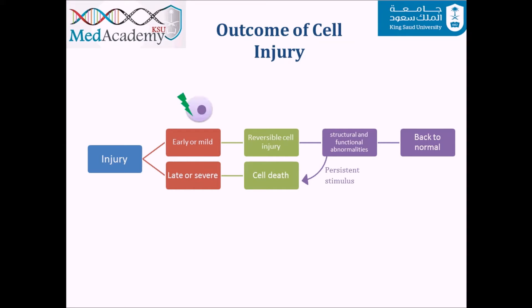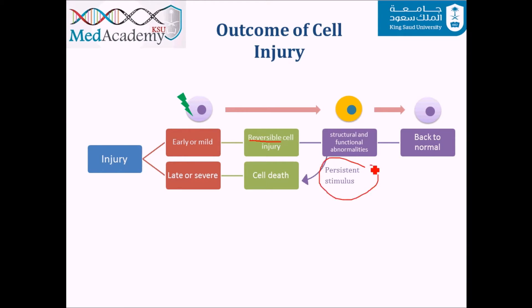If the injury is mild or very early, it can be reversible, leading to structural and functional abnormalities in the cell that could return to normal. However, if the stimulus is persistent, cellular death could happen, resulting in either apoptosis or necrosis. A cell can also go into death right away if the injury is very severe.